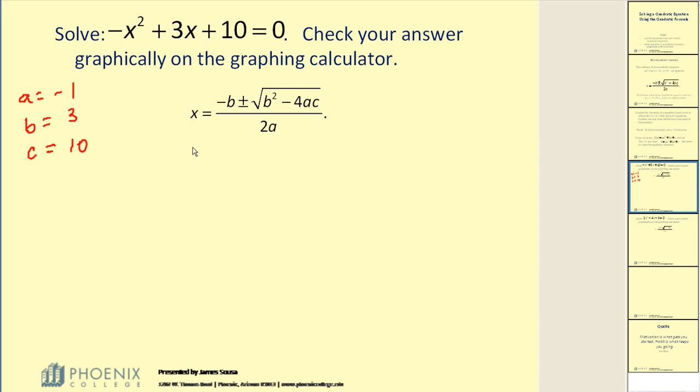We're going to do the substitution into the formula and then begin to simplify. B squared would be three squared. I'm not doing any math this time. I'm just doing the substitution.